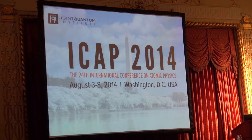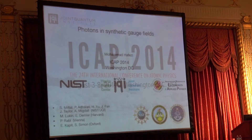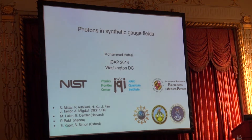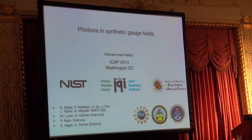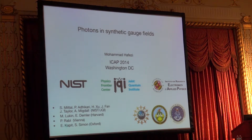A call on the next speaker, Mohammed Hafezi from the University of Maryland, again on photons in synthetic gauge fields. Einstein was talking about light quanta, and then only in 1926 a guy called Gilbert Lewis came around and said he would use these new objects which he called actually atoms in the beginning, now photons. So this is where the name photon comes from. So 88 years later, you are turning this around again and we are now hearing of photons in terms of atoms.